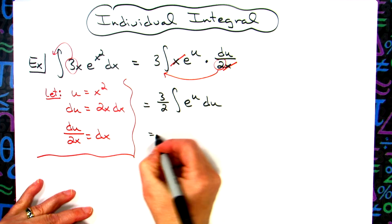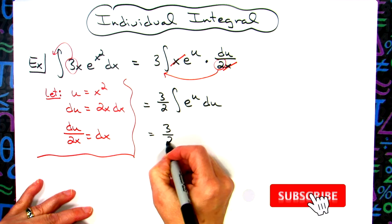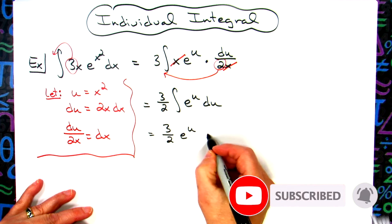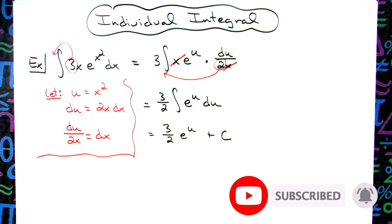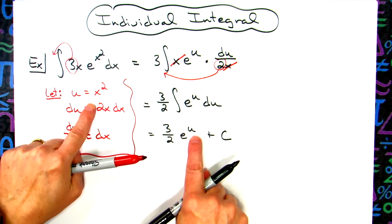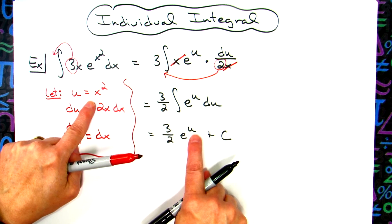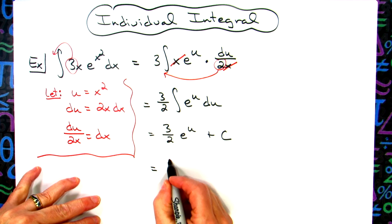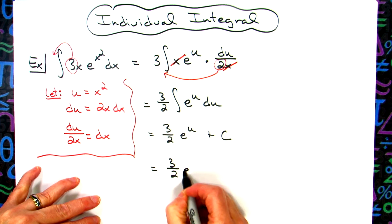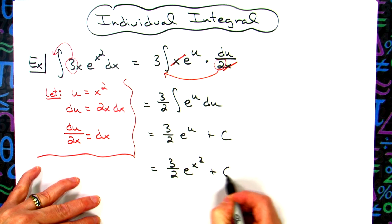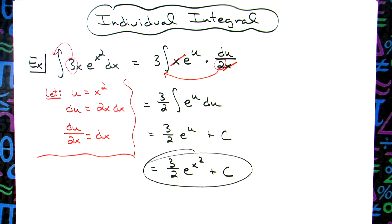Hopefully at this point you know that the integral of e to the u is e to the u, so I will have 3 halves e to the u. We can go ahead and do a plus C on there because we've finished our integration. Last step will be to replace u with what it equals, so then I'll have 3 halves e to the x squared plus C.